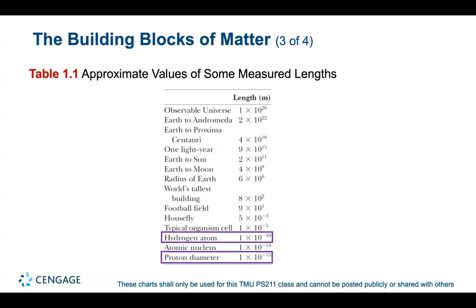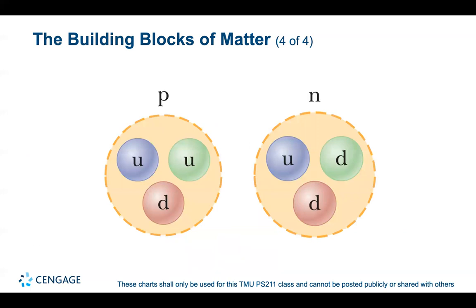The proton is 100,000 times smaller than the hydrogen atom — five orders of magnitude smaller. If the proton were the size of a ping-pong ball, the electron would be a tiny speck about the size of a bacterium orbiting a kilometer away. Other atoms have similar structure, meaning there is a surprising amount of empty space in ordinary matter.